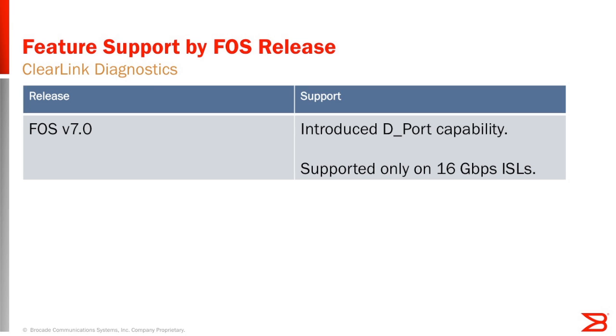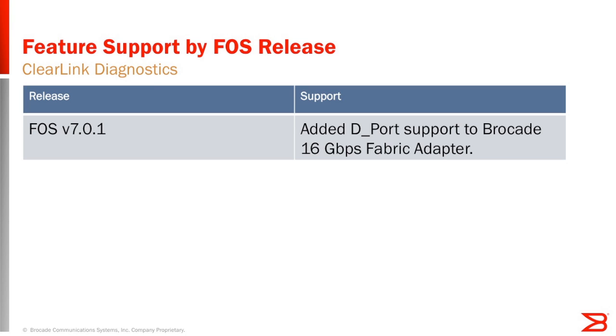The initial debut of diagnostic port was launched in FOSS 7.0, where Brocade debuted Gen 5 platforms beginning with the DCX 8510 and the fixed-port Brocade 6510 — a 48-port, Gen 5, 16-gig capable fiber channel switch. Initial D-port support was only on ISL, meaning E-port to E-port over ISL connections. In FOSS 7.0.1, support was added for D-port between a Brocade Gen 5 switch and a Brocade 16-gig fiber channel adapter — not just switch-to-switch, but now switch-to-Brocade-adapter — and D-port support was also added on access gateway mode switches.